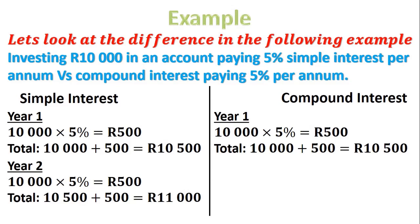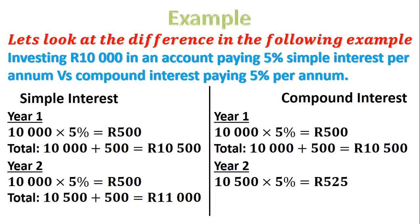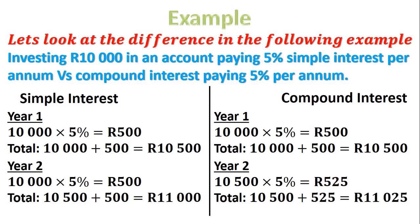Now for compound interest in year two, instead of taking 10,000 Rand like we do for simple interest, we take 10,500 Rand — which is the finishing amount for year one — and we multiply that by 5%. We then get 525 Rand. So our total for year two for compound interest is 10,500 plus 525, giving us a total of 11,025 Rand.